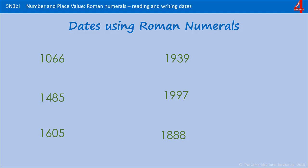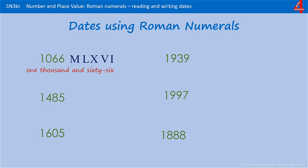The first one — we say the number 1066. We have 1000, we don't have anything in the hundreds, but we have 60, which is 50 and 10, and then we have 6. I chose that date because it's the Battle of Hastings.